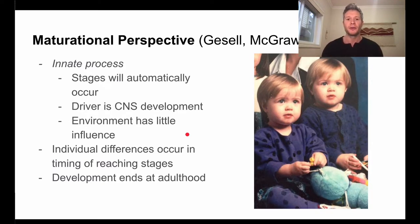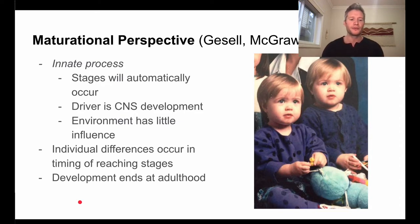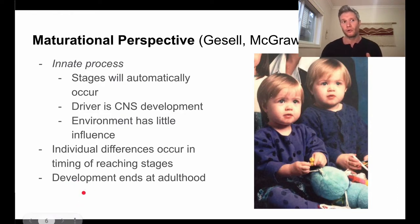One argument for this perspective is there's relatively set timing for when we develop certain motor characteristics. Being able to walk, for example, generally happens between 12 and 18 months. One shortcoming of this perspective is it claims development ends in adulthood — once you fully grow up and your brain stops developing, around age 24 to 26, you're done developing altogether. Some researchers even end it after puberty.